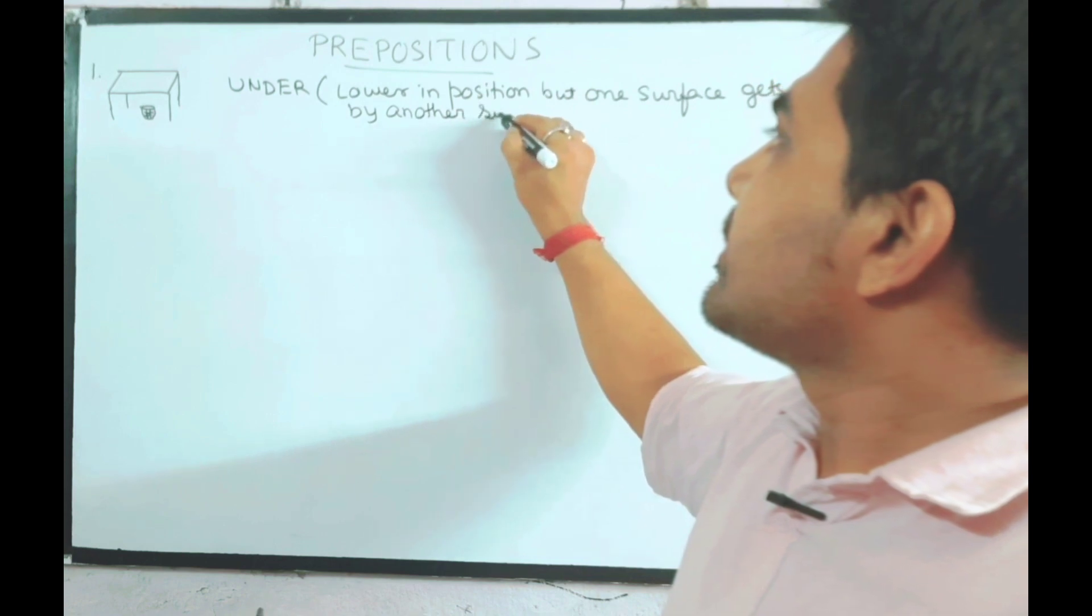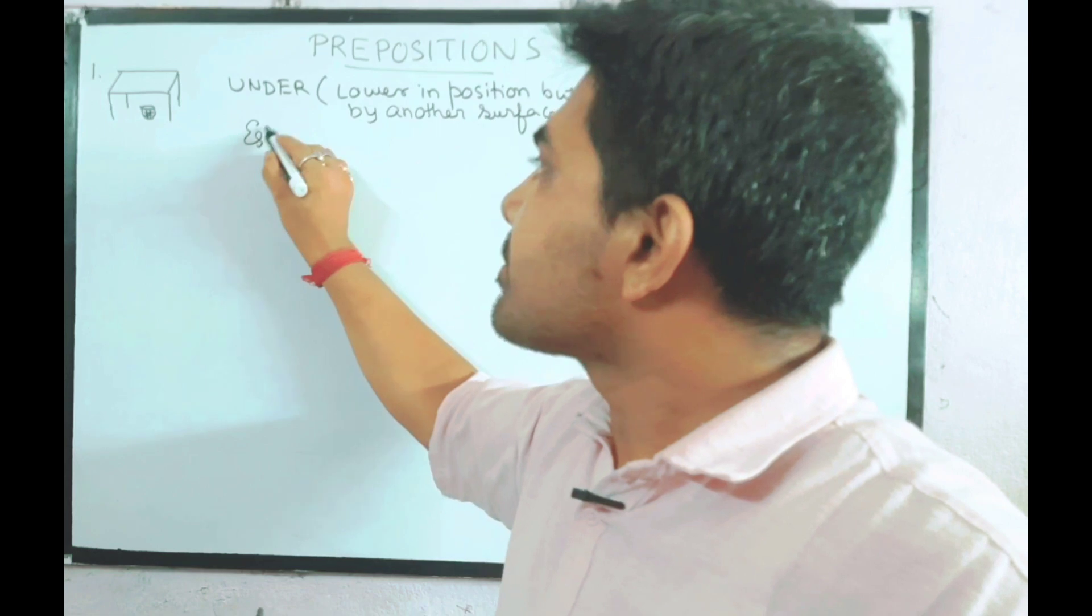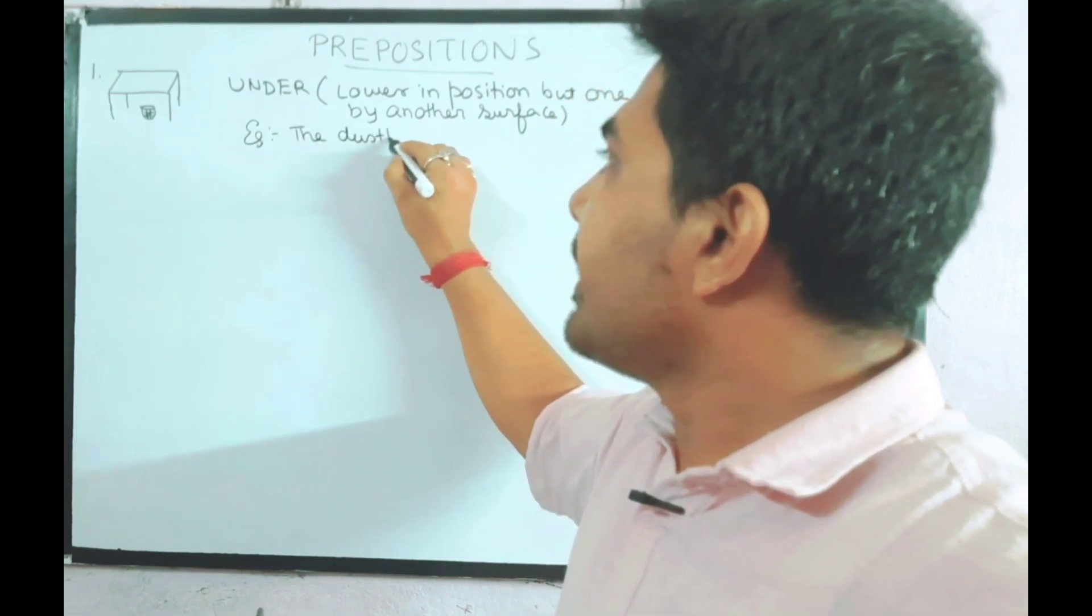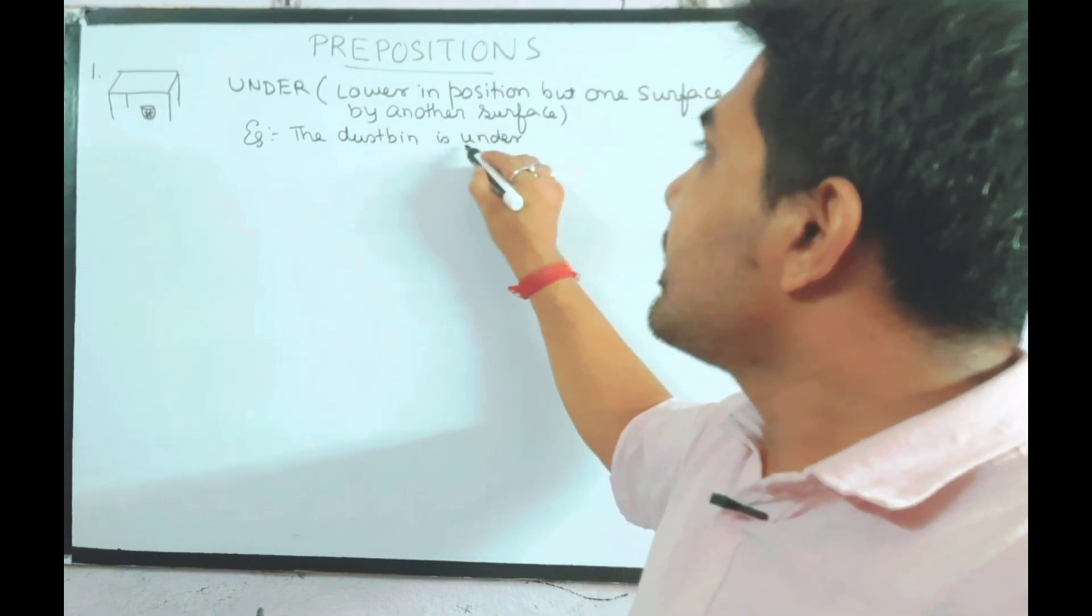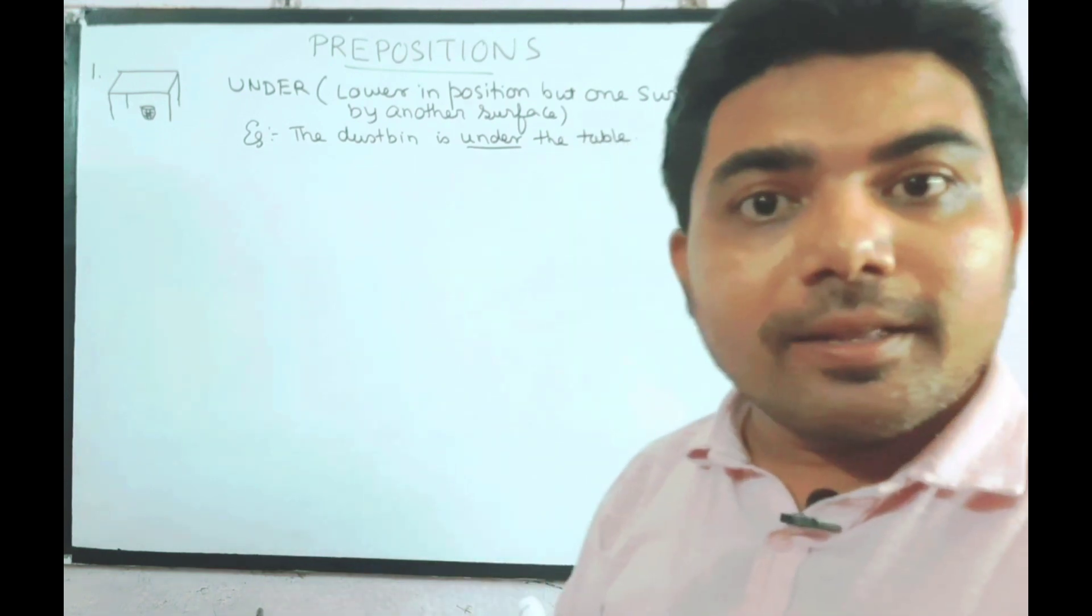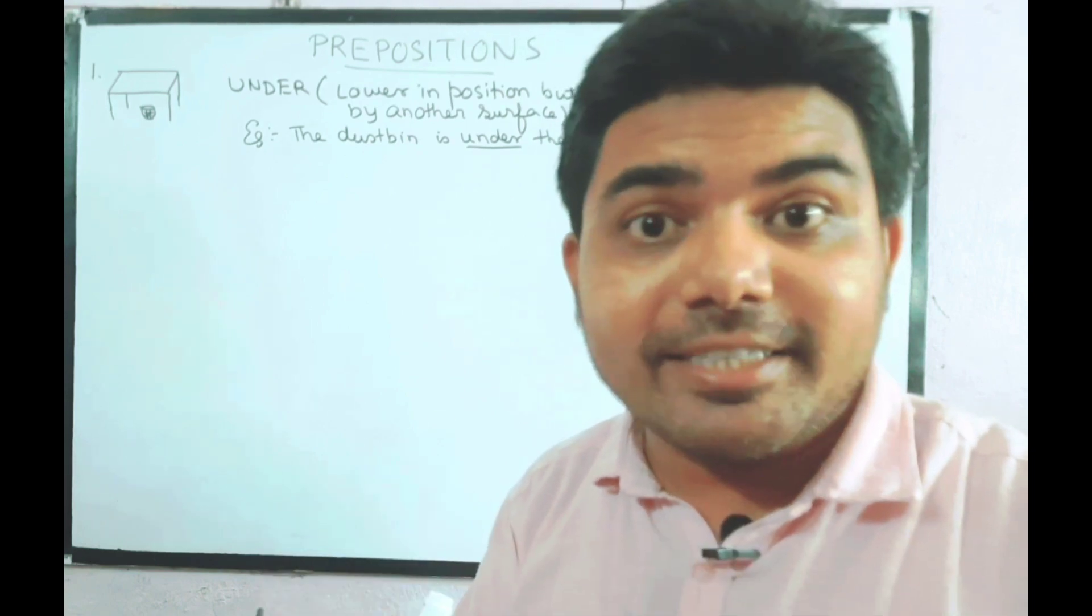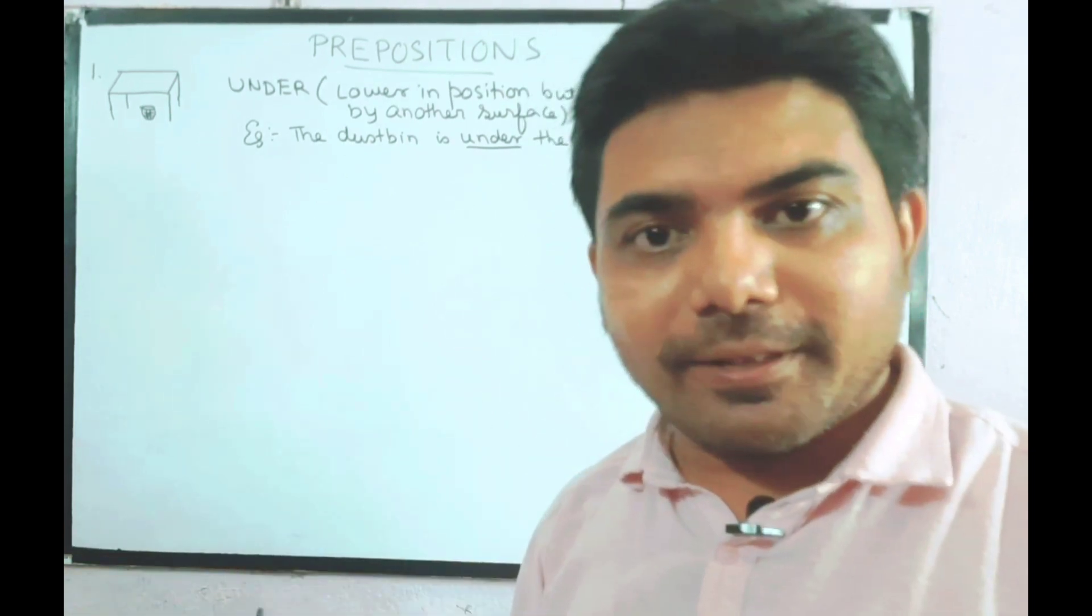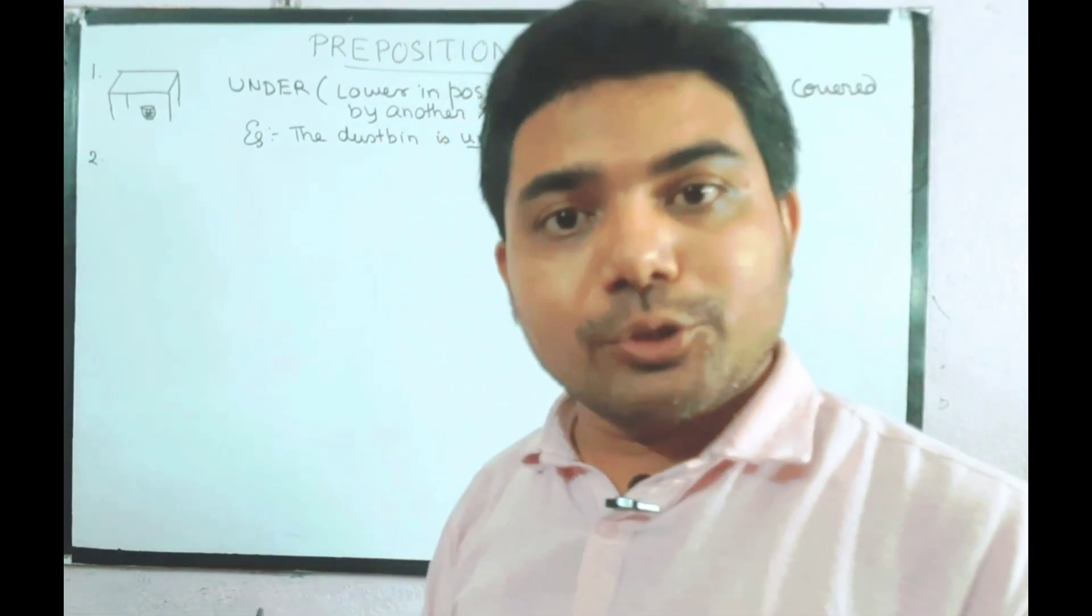So lower in position but one surface gets covered by another under the surface. Example: the dustbin is under the table. Sometimes we also hide when playing in childhood, hiding under the table. The boy is hiding under the table. Next, number two.